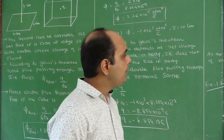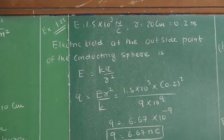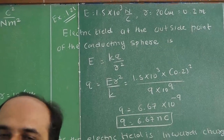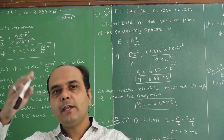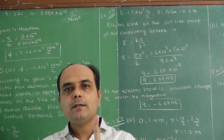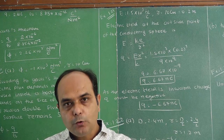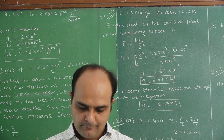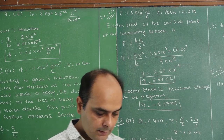Now we are moving on the next example, that is example number 21. This example is related to the electric field. The electric field outside a spherical shell is given by kq by r square, but inside the spherical shell the electric field is zero, as studied in this chapter.